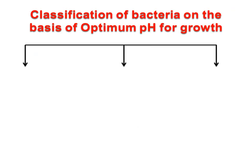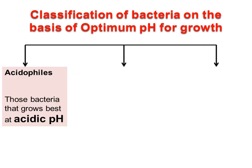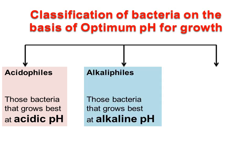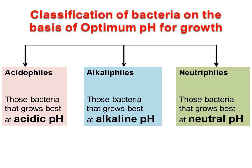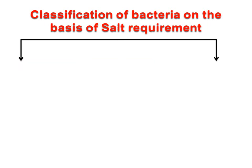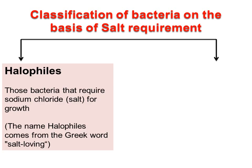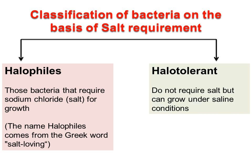Classification of bacteria on the basis of optimum pH for growth: Acidophiles are those bacteria that grow best at acidic pH. Alkaliphiles are those bacteria that grow best at alkaline pH. Neutrophiles are those bacteria that grow best at neutral pH. Classification of bacteria on the basis of salt requirement: Halophiles are bacteria that require sodium chloride or salt for growth — the name halophile comes from the Greek word meaning salt loving. Halotolerant organisms do not require salt but can grow under saline conditions.